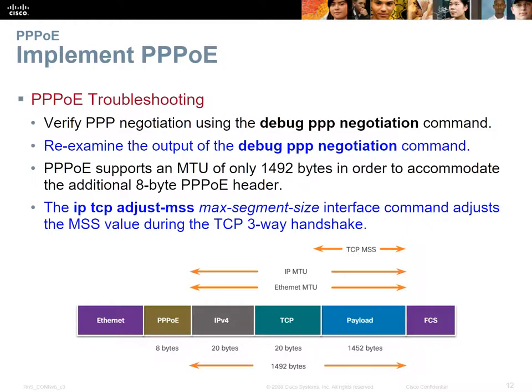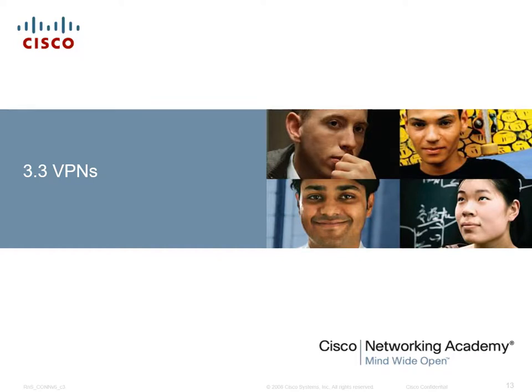For troubleshooting, use 'debug PPP negotiation' — make sure passwords are correct and both ends support PPP. Drop the MTU if fragmentation is occurring. You can also use 'ip tcp adjust-mss' which is a higher-level pushback to tell all devices behind the router to reduce their payload size before they begin transmitting, ensuring everything is encapsulated without fragmentation. There is a PPPoE lab for this chapter — please do it, it's a very good exercise.